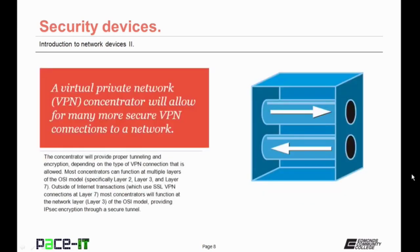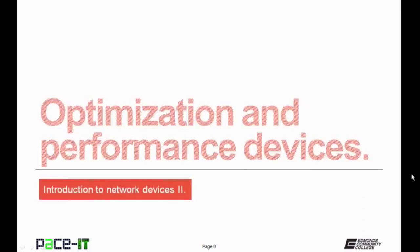Let's move on to the virtual private network concentrator, or VPN concentrator. This will allow for many secure VPN connections to a network. The concentrator will provide proper tunneling and encryption depending upon the type of VPN connection allowed. Most concentrators can function at multiple layers of the OSI model — specifically at Layer 2, Layer 3, and Layer 7. Outside of internet transactions, which use an SSL VPN connection at Layer 7, most concentrators will function at the network layer — Layer 3 — providing IPSec encryption through a secure tunnel.